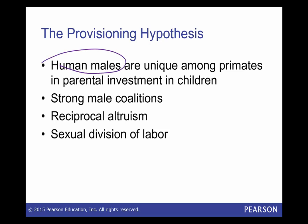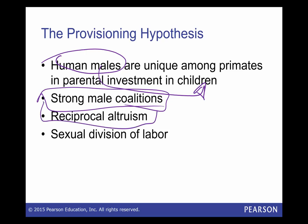Human males tend to invest more in their children than other primates do. Most other primates are not sure that offspring is theirs, so they move on. If I can hunt and acquire a bunch of meat, I can take that back and feed my family. There are also strong male coalitions — though I'm not entirely convinced reciprocal altruism or the sexual division of labor are all that unique to humans. Chimpanzees have strong male and female coalitions as well.